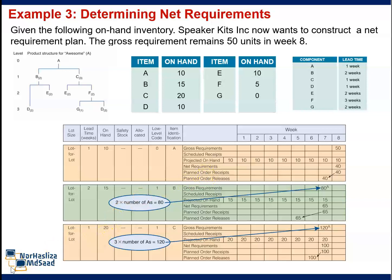We begin with A and work backward through the components. Constructing a net requirements plan is similar to constructing a gross requirements plan. Starting with item A, we work backward to determine net requirements for all items. To do these computations, we refer to the product structure, on-hand inventory, and lead time.